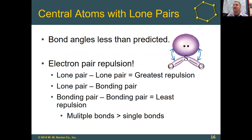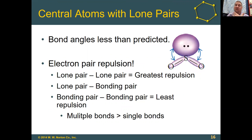When we see lone pairs on molecules, one of the unique things about having those lone pairs is not only are they going to prevent us from seeing an atom in that position and change the molecular shape, but they're also going to have a slightly greater repulsion on the bonds than regular bonds would have. So in a molecule with a lone pair of electrons, that lone pair will change the molecular shape and also change the bond angle a little bit.